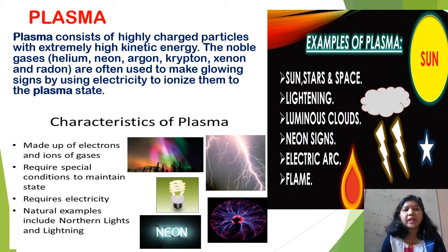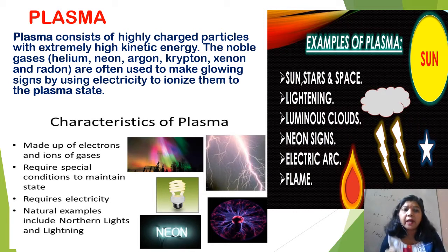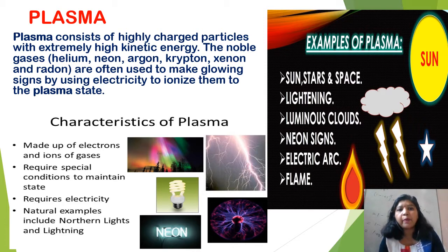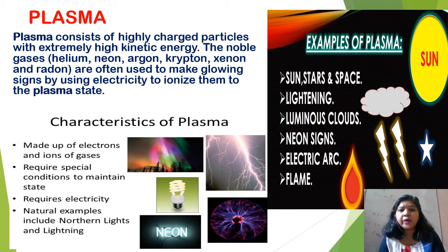The characteristics of plasma: they are made up of electrons and ions of gases. The ionized particles form plasma, which requires special conditions to maintain the state. When electricity is provided, it creates the ionized form. Natural examples include the northern lights and lightning, which are also plasma.